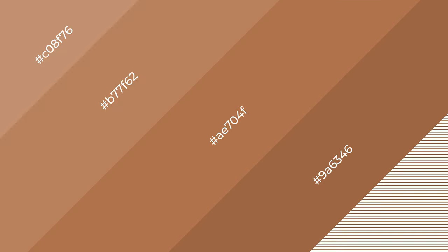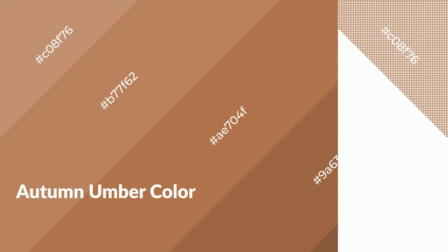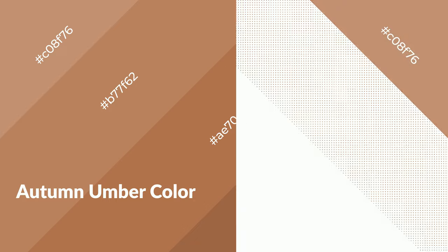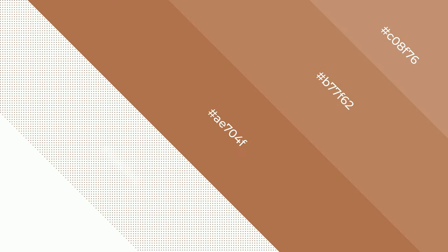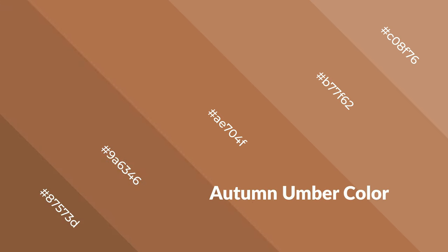Autumn umber is a warm color and it emits cozier and active emotions. Warm colors are symbols of warmth, fire, heat, and sunshine. It also evokes joy, passion, love, and even anger emotions. You can see them used in restaurants and gyms.